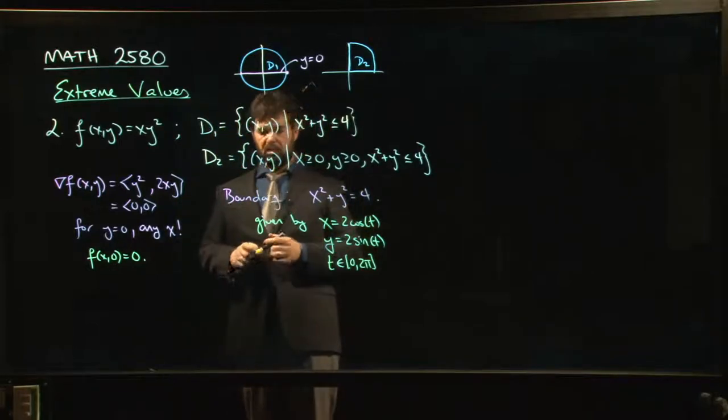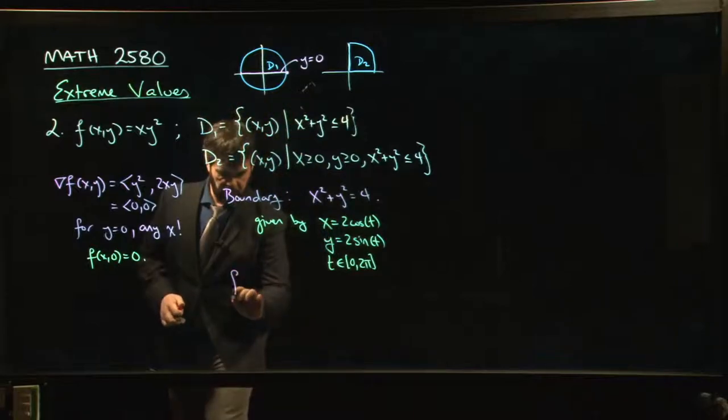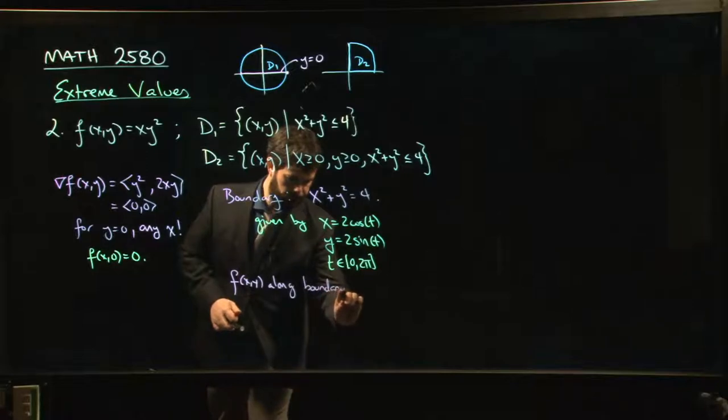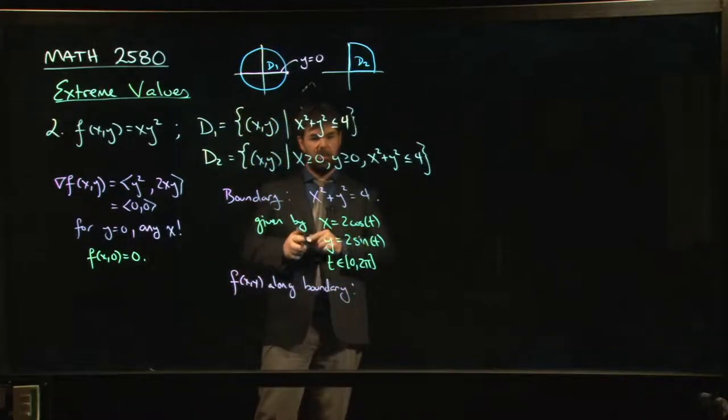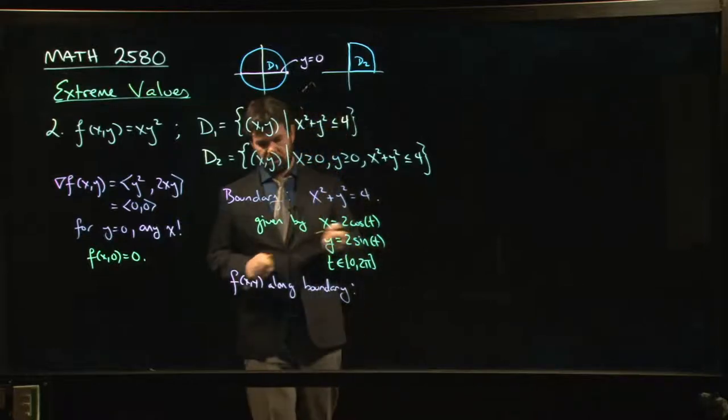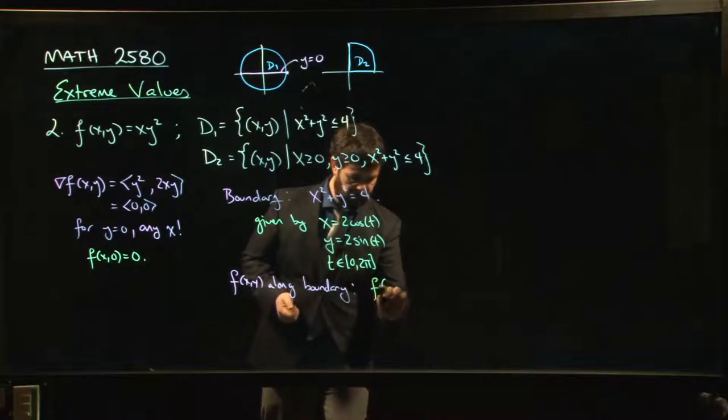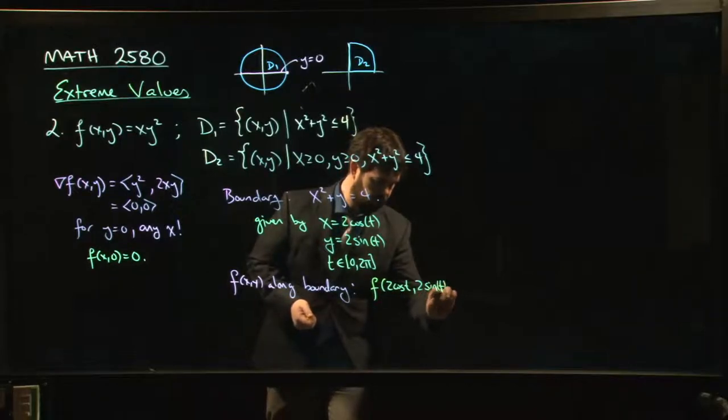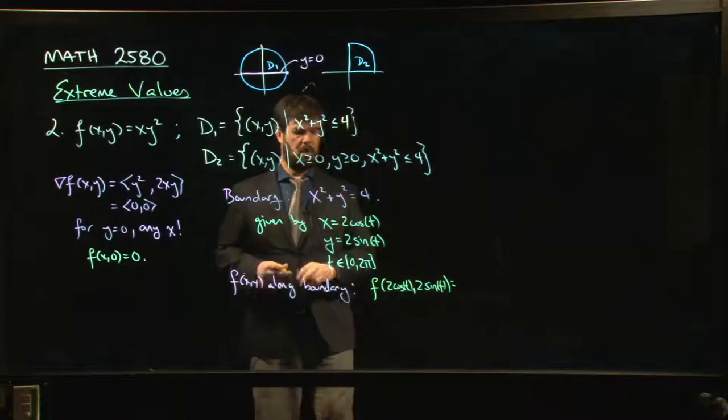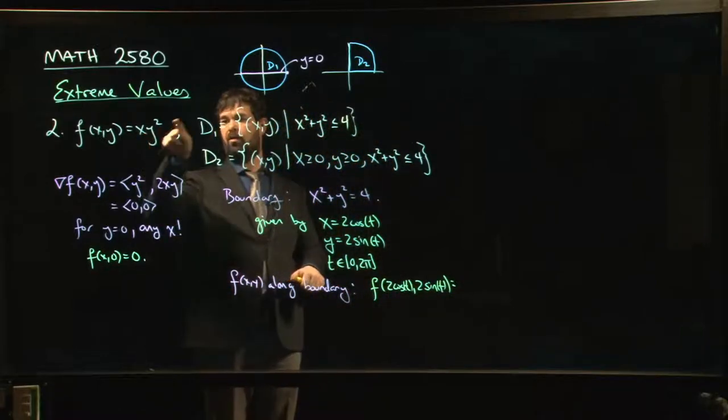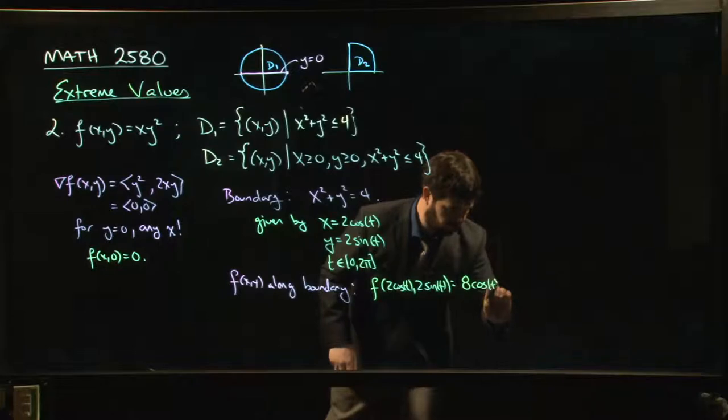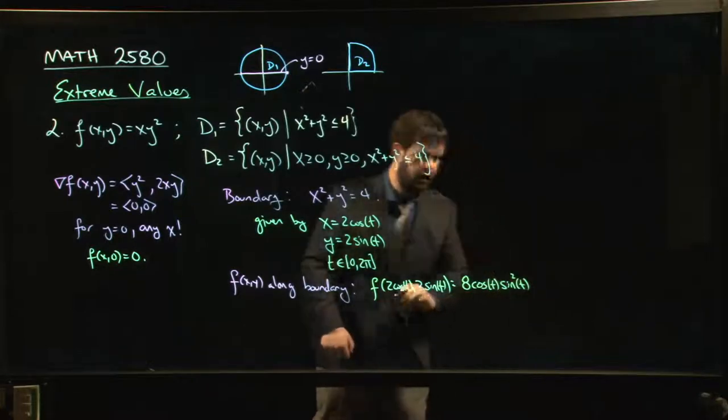So what we can do now is we can say what does f look like along the boundary? Well, along the boundary x is equal to 2 cos t, y is equal to 2 sin t. So for every boundary point we get f at 2 cos t, 2 sin t, which is going to be, well, 2 cos t times 2 sin t times 2 sin t.